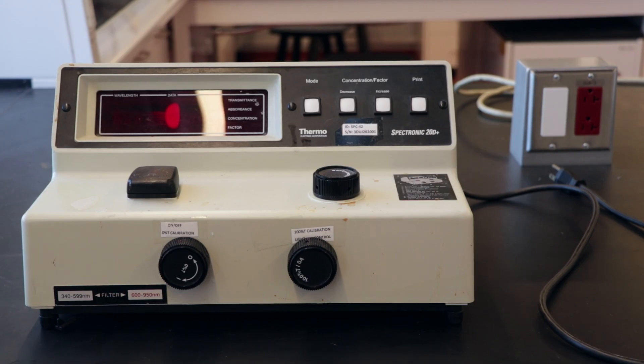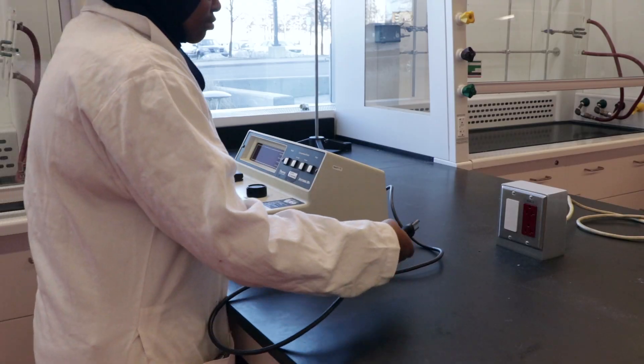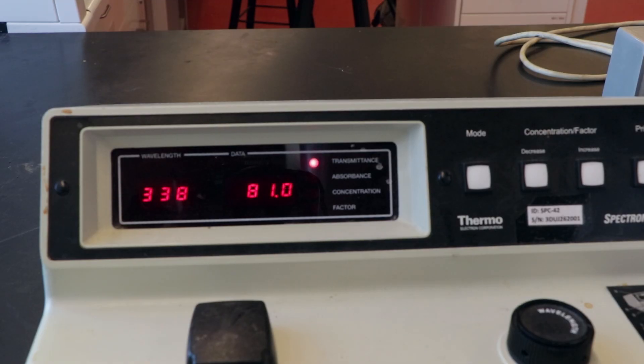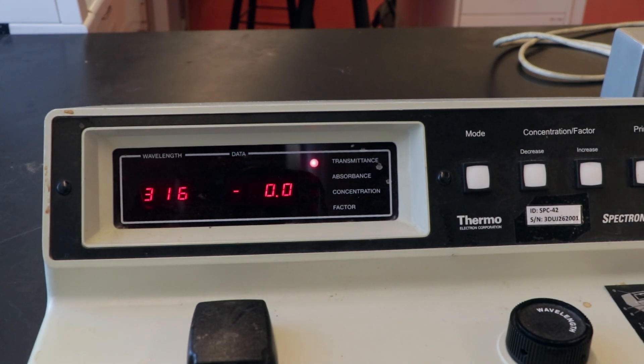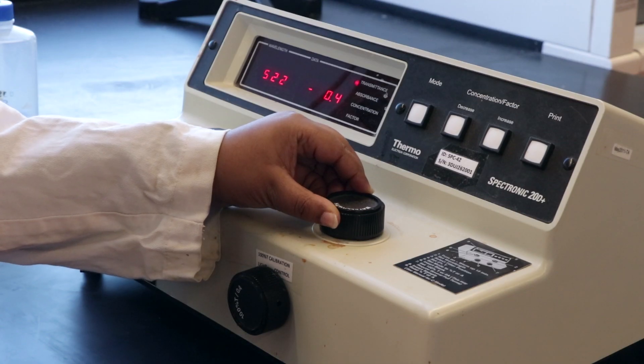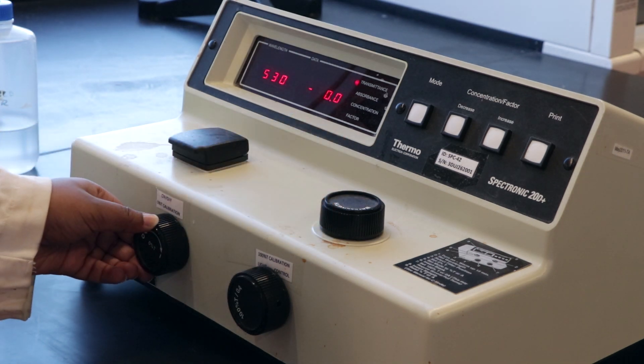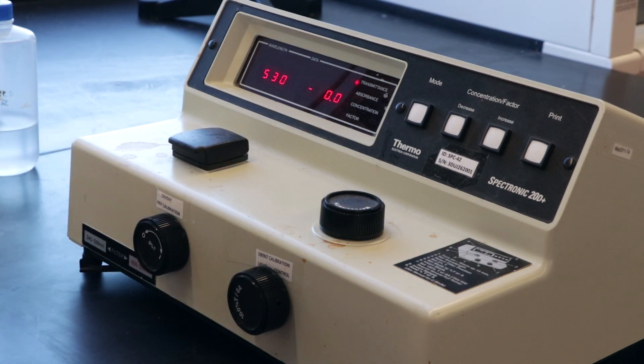These will be the spectrometers that you'll be using in this lab. Turn on your spectrometer at the beginning of the lab to warm it up. Remember to remove your gloves when using the spectrometer. Make sure that the wavelength is set to 530 nanometers and make sure that the transmittance is set to zero.